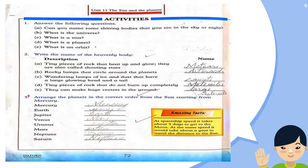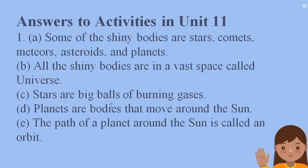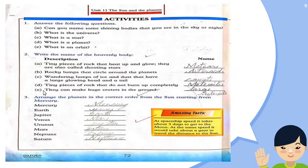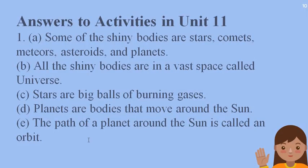What is a planet? We have studied this chapter and read the names of eight planets. Planets are bodies that move around the sun. Now, what is an orbit? The path of a planet around the sun is called an orbit. I have also seen this picture with the white color paths.